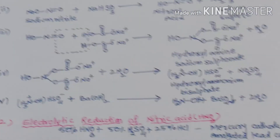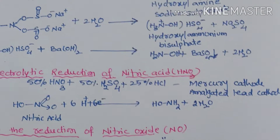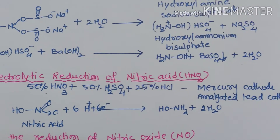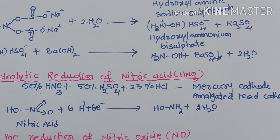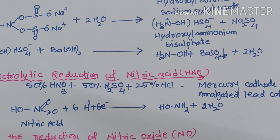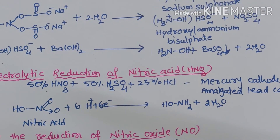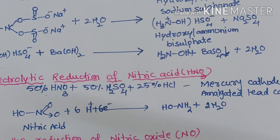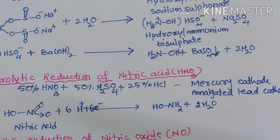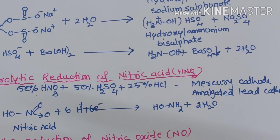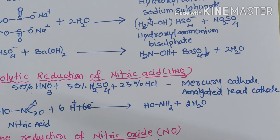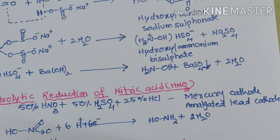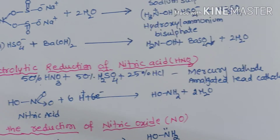The next method is the electrolytic reduction of nitric acid (HNO₃). In this method, a mixture of H₂SO₄ and HCl is added to 50 percent HNO₃ and this mixture is used as the electrolyte. Mercury cathode or amalgamated lead is used as the cathode. Nitric acid undergoes reduction and gives hydroxylamine.